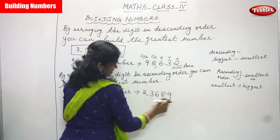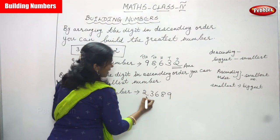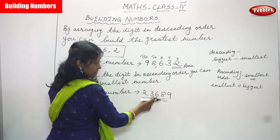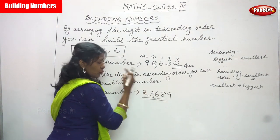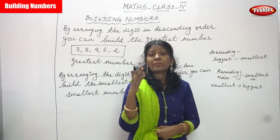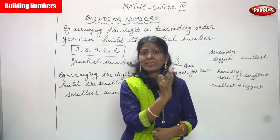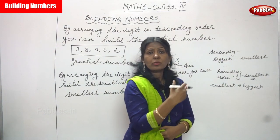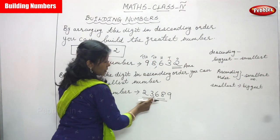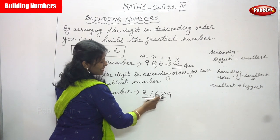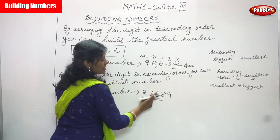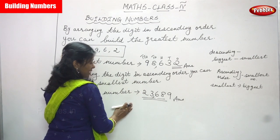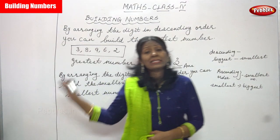We got the smallest number. The answer is twenty-three thousand six hundred and eighty-nine. Ones, tens, hundreds — leave the last three digits, then use a comma for every two digits. So: ones, tens, hundreds, thousands, ten thousands. Twenty-three thousand six hundred and eighty-nine is the smallest number.